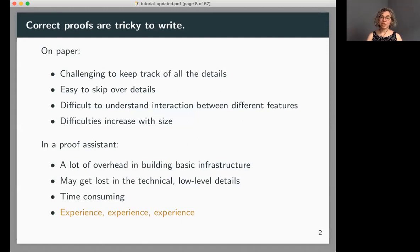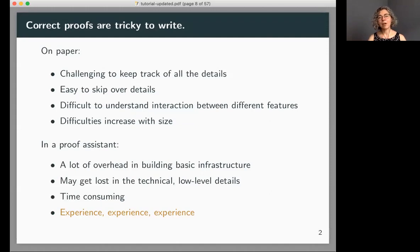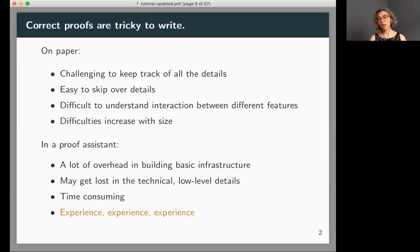Proof assistants are a good solution: if we have a good implementation and we change something, the type checker flags lemmas that are no longer valid. But there's a lot of infrastructure to build up, and many choices to make — how to represent the grammar, variables, variable bindings, the context, how to model substitutions and renaming. These are things we teach in undergraduate logic or programming languages courses.